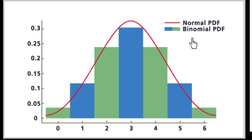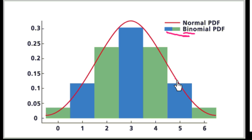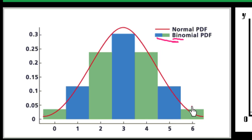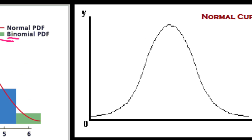Here I would like to explain the binomial and normal probability distribution of frequency through a graph. In this graph, the histogram shows the binomial probability distribution of frequency. The frequency curve shown in red color represents the normal probability distribution of frequency — this is the curve by which we draw the normal probability distribution.